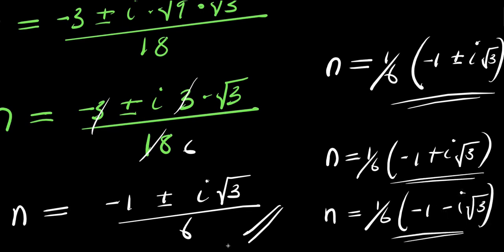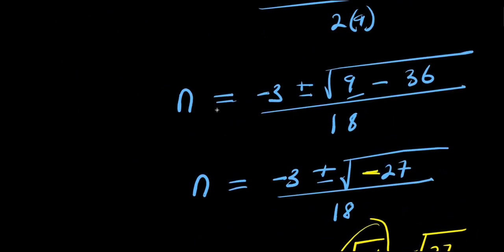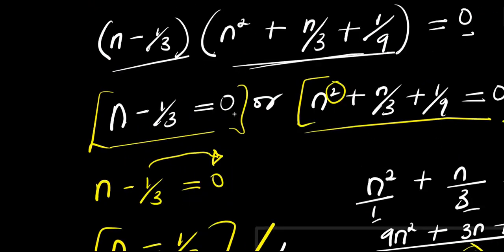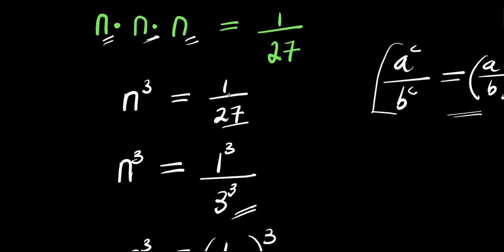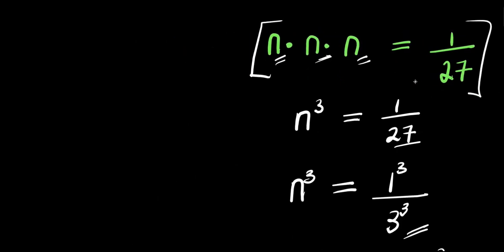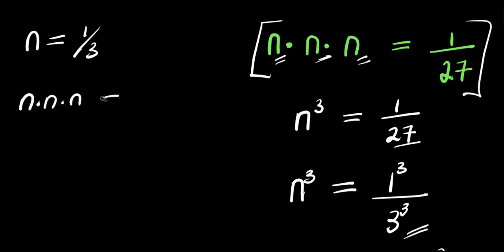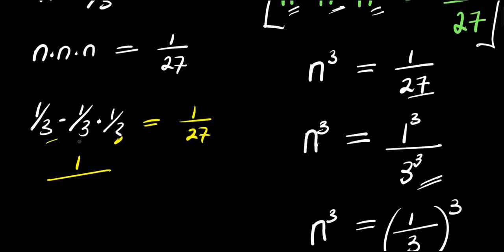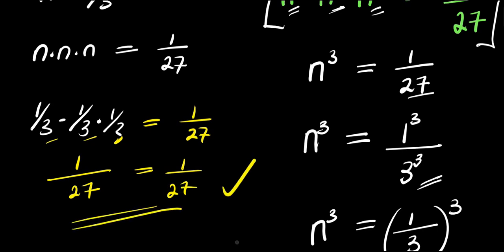So these are the complex solutions, and we also have the real solution, which is 1 over 3. To verify: substitute n equals 1 over 3 back into n times n times n equals 1 over 27. We get 1 over 3 times 1 over 3 times 1 over 3 equals 1 over 27. Multiplying the numerators: 1, and the denominators: 3 times 3 times 3 equals 27. So 1 over 27 equals 1 over 27. That is it. Thank you.